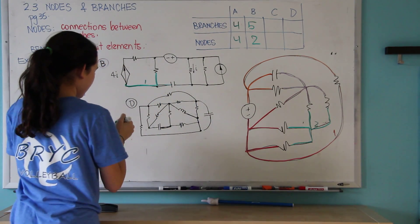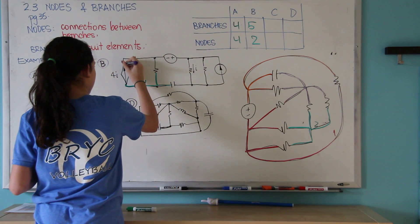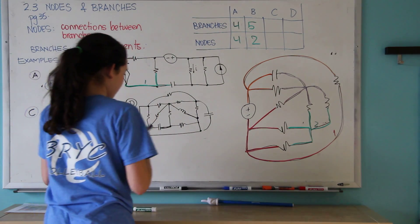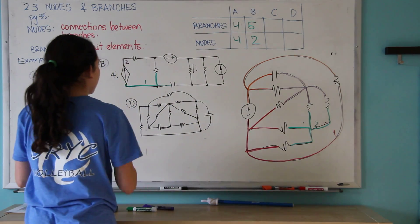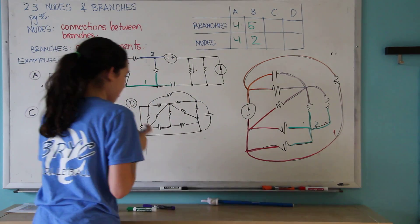So that counts as one. And then you just move on to the next one. That counts as two because there are two branches. And then three, that's the third node.